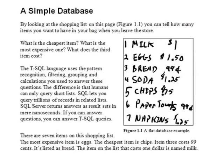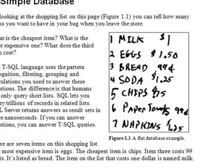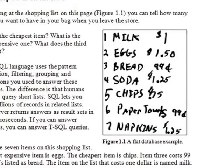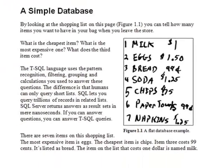This picture from a page in the book shows a quick example of a very simple database in the form of a shopping list. By looking at this figure, you can tell exactly how many items you'd better have in your bag when you leave the store. But let's leave the database terminology, or GeekSpeak, up to the next section.